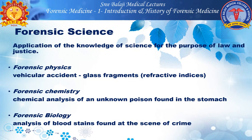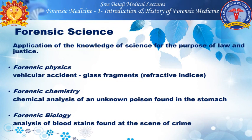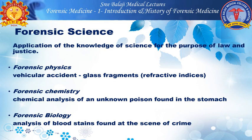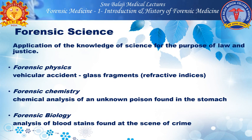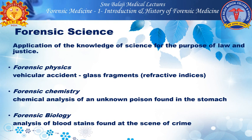Forensic science is the application of the knowledge of science for the purpose of law and justice. It has various branches like forensic physics, forensic chemistry, and forensic biology. Forensic physics involves examination of glass fragments and finding refractive indices in vehicular accidents. Forensic chemistry involves chemical analysis of an unknown poison found in the stomach or other organs. Forensic biology involves analysis of blood stains or seminal stains found at the scene of crime or in cases of sexual assault.